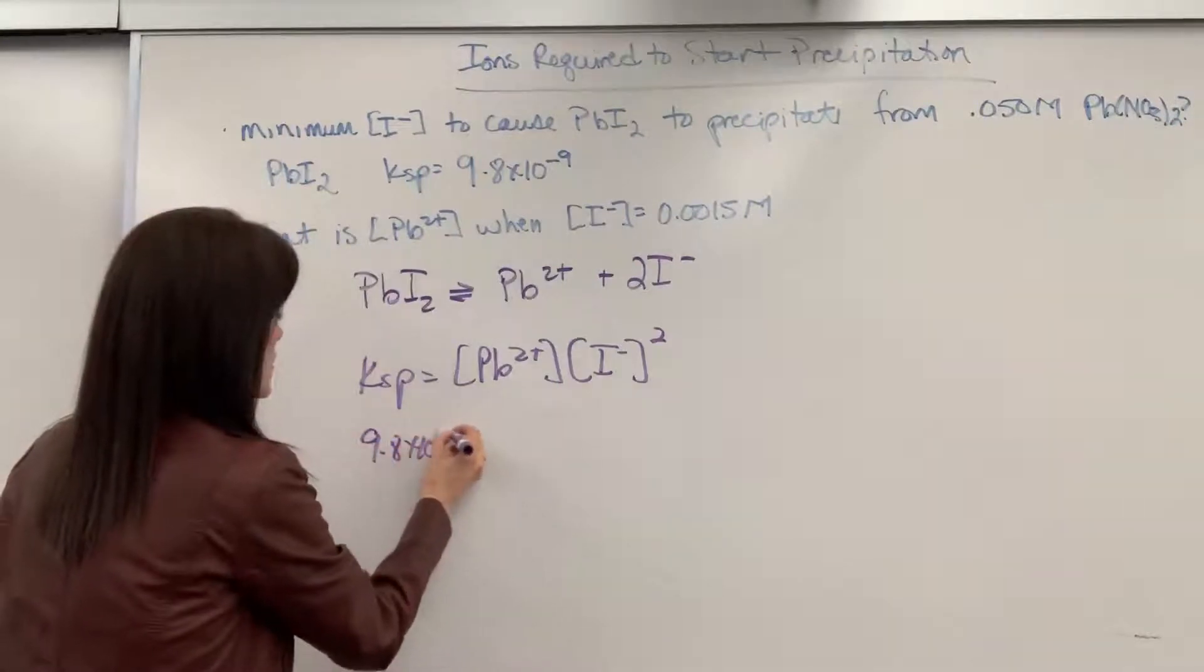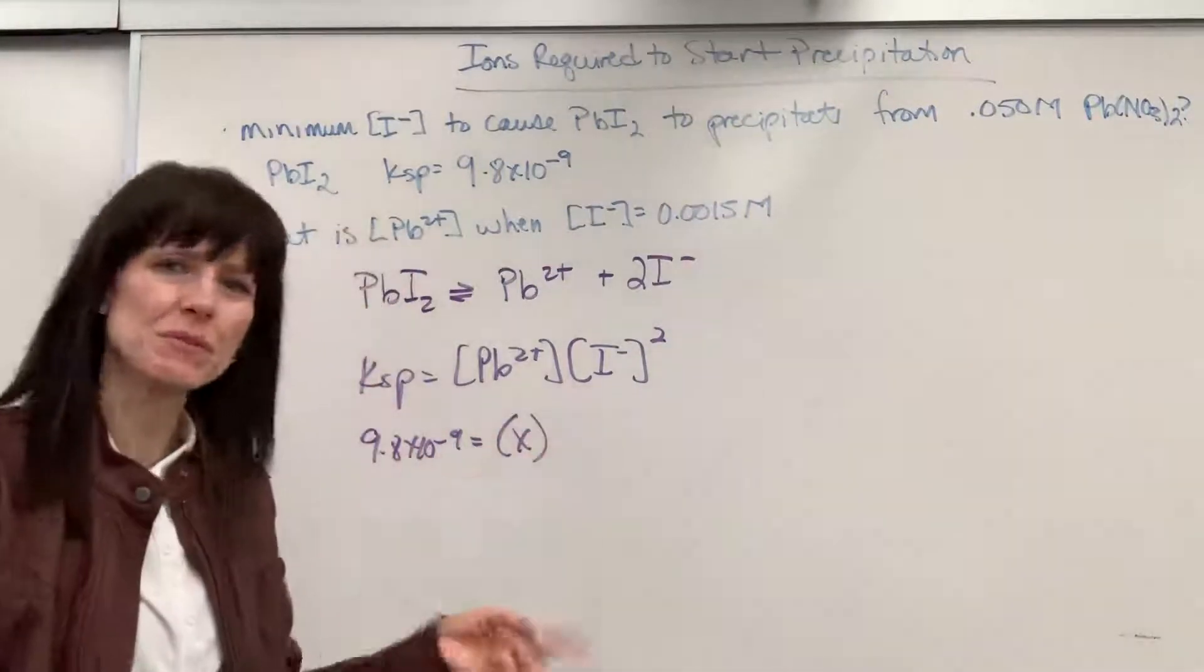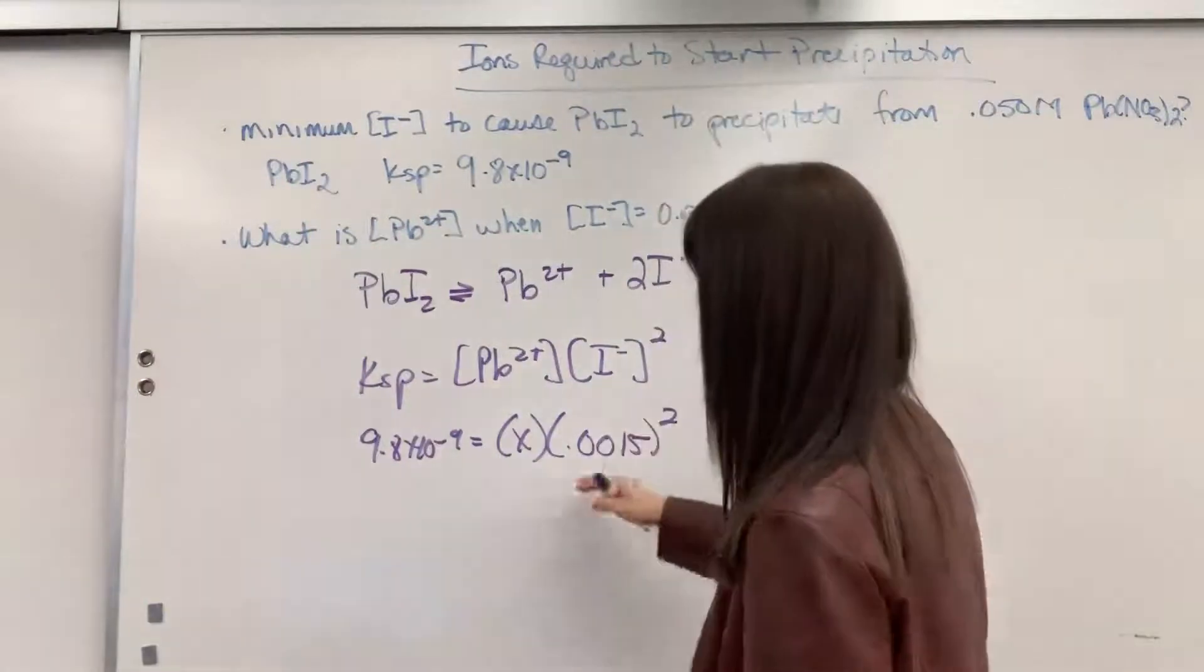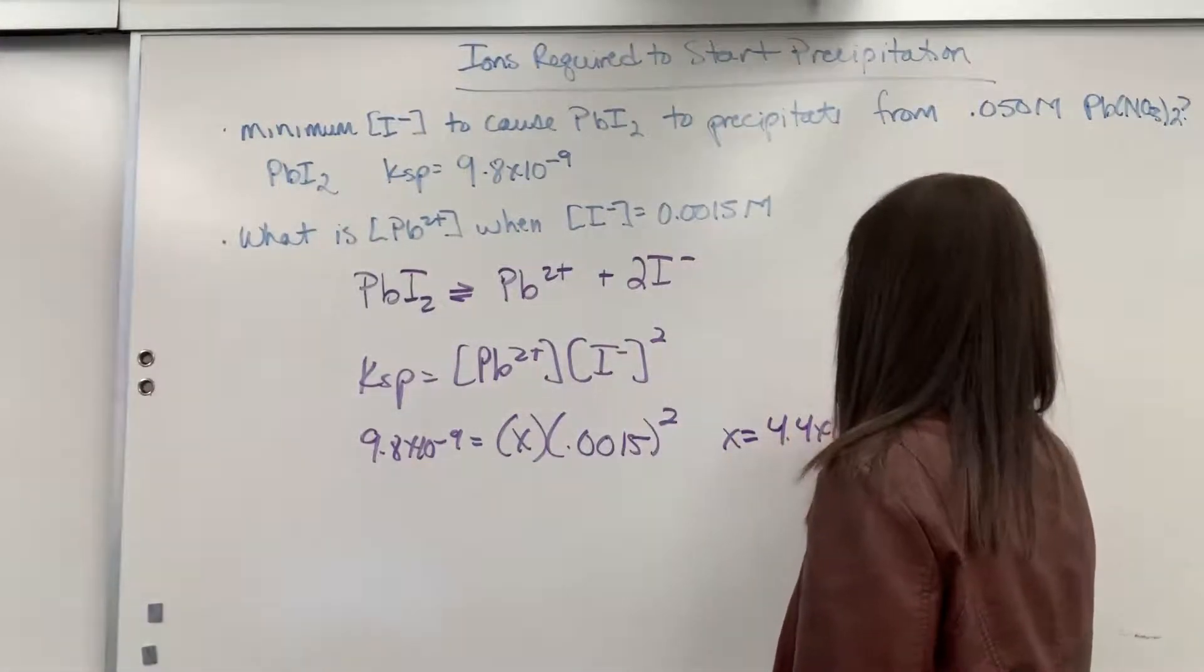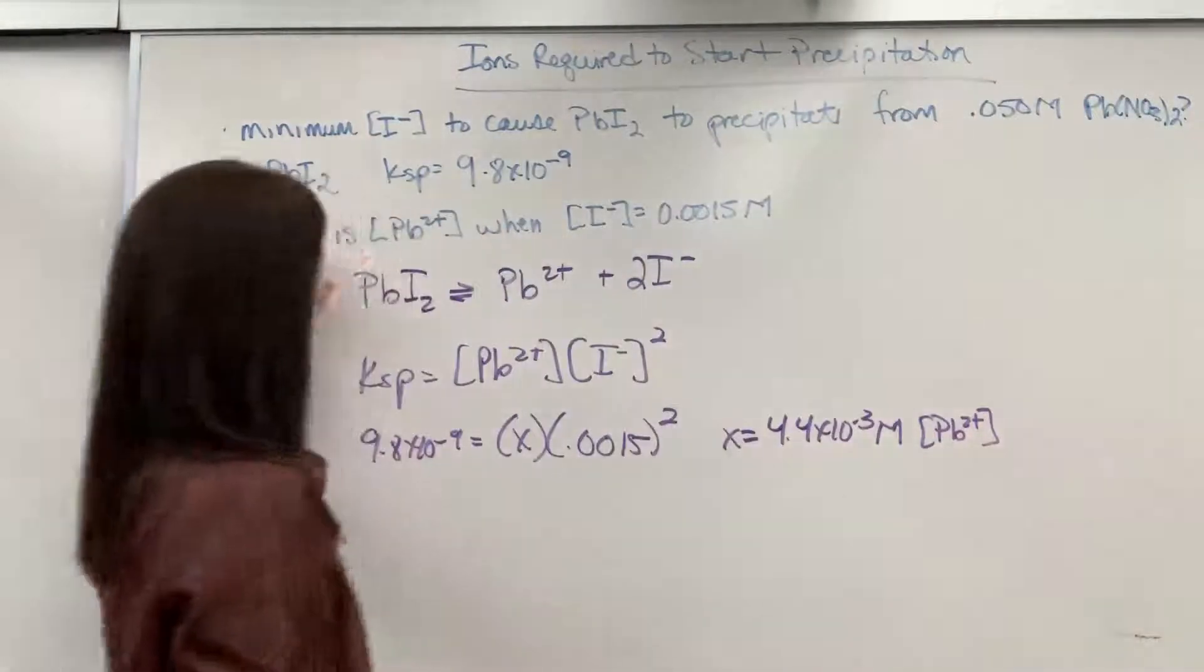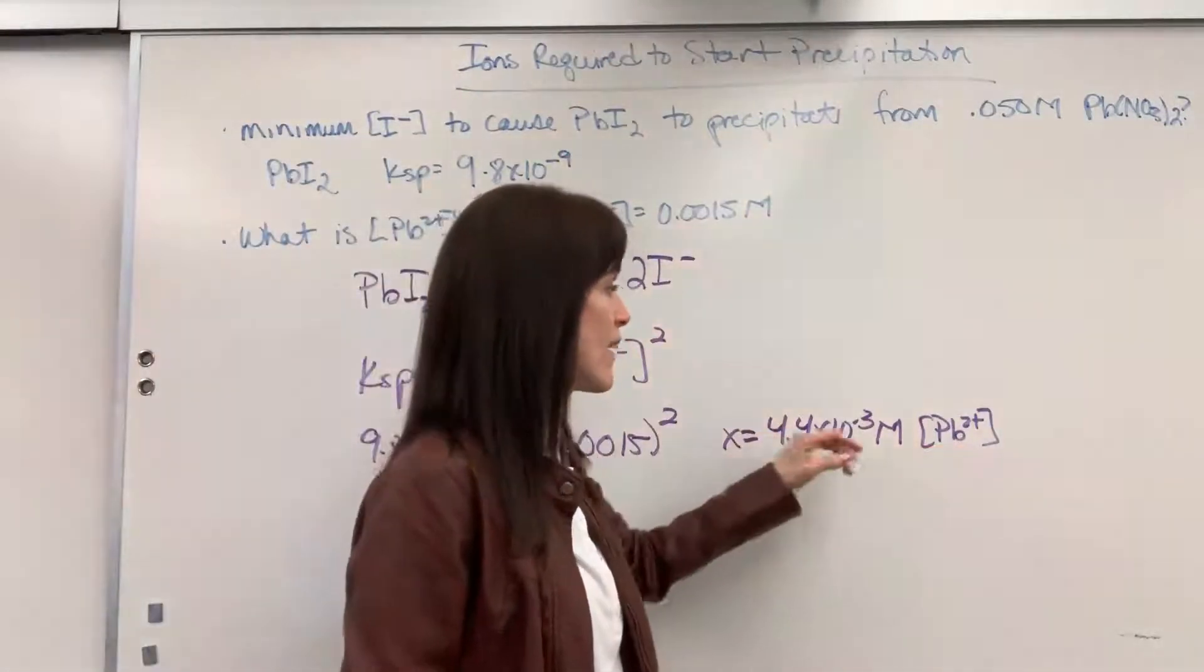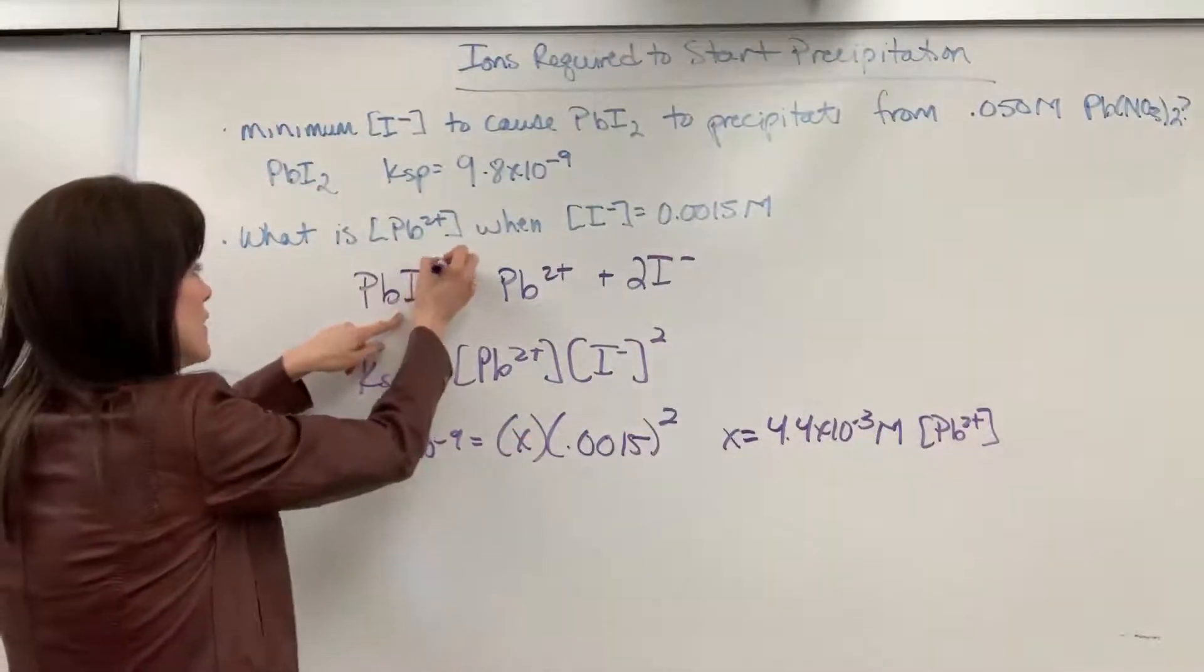So now we plug in what we have. Again, KSP 9.8 times 10 to the minus 9 equals, here's my question. Now I want to know the amount of the lead ion. What's the maximum amount that I can have for that lead ion when the concentration of the iodide is 0.0015? And again, embedded in this, I'm at equilibrium. This is saturation. So if we square this and divide it over, X will equal 4.4 times 10 to the minus 3 molar. And remember, that's our lead 2+ ion. So the maximum concentration that we can have is 4.4 times 10 to the minus 3 molar. I can't have any more lead. If I add even just a little bit more lead, what's it going to do? It's going to precipitate. It's going to go backwards right here and become that solid lead iodide.